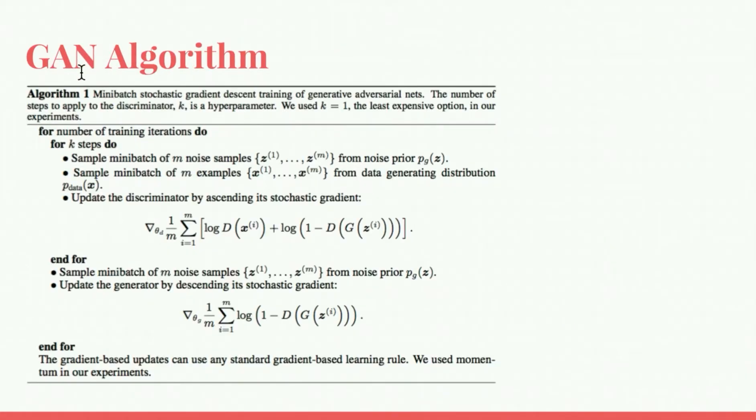The GAN algorithm is presented here. It has an outer loop that runs for as many training iterations as you assign. Then for K steps, and you can use K equals one in the simplest case, you'll sample some number of noise values, those are the Z with a subscript one to M, and then also sample the same number of training examples, which is X one to M.